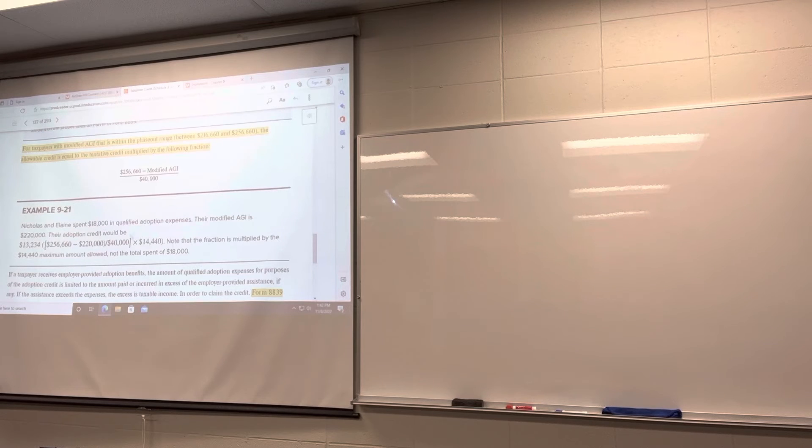So here we've got Nicholas and Elaine. They spent $18,000 in qualified adoption expenses. Modified AGI is $220,000. They don't get to use the $18,000 in the calculation. It's going to be the maximum amount that they get to use. If it was not a special needs adoption, it would be limited to how much they actually spent. If it was a special needs adoption, then it would be the $14,440. In this case, if they spent $18,000, they're still limited to the $14,440 as the maximum credit. So the fraction is going to be multiplied by the $14,440. So their total credit is $13,230.